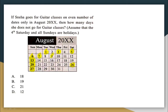She will not go on 11th, 15th, 17th, 19th, 21st, 23rd, 25th, 29th, and 31st. So totally, how many days hasn't she gone? Counting: 1, 2, 3, 4, 5, 6, 7, 8, 9, 10, 11, 12, 13, 14, 15, 16, 17, 18.